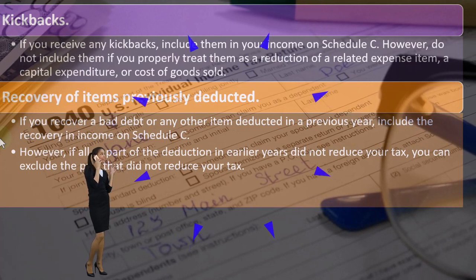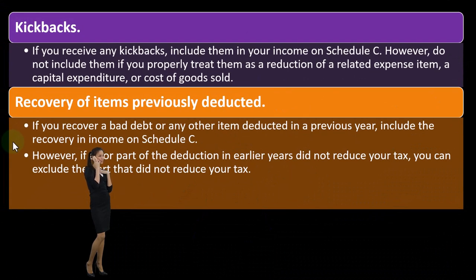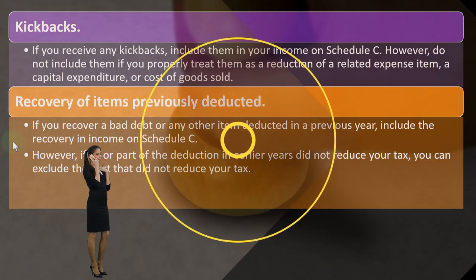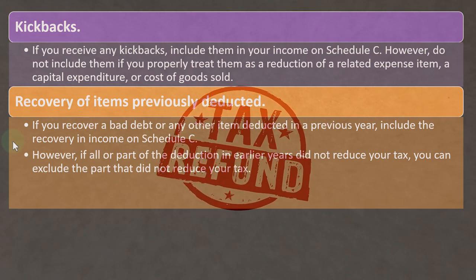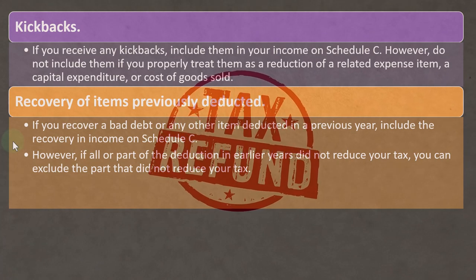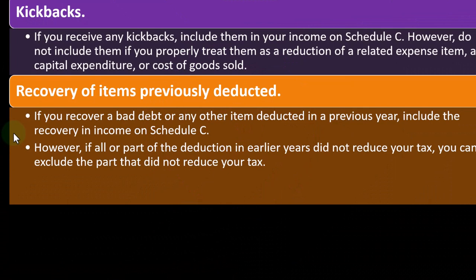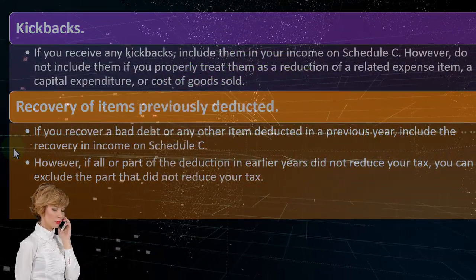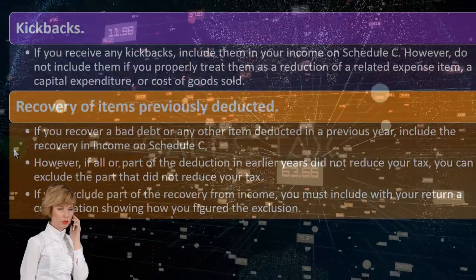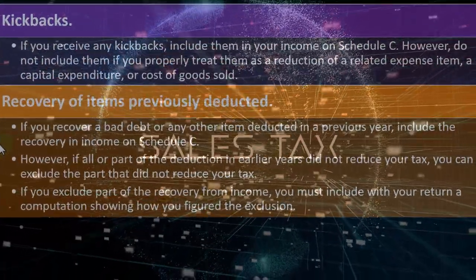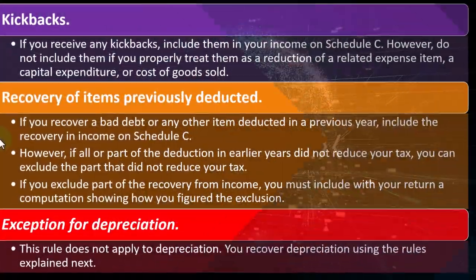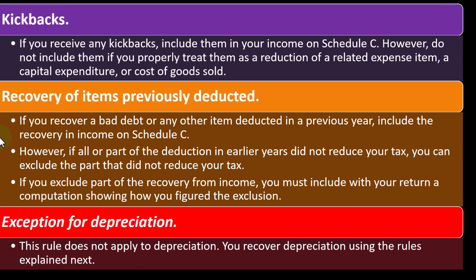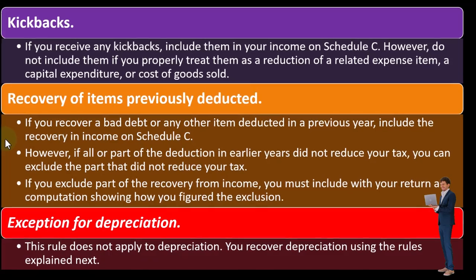However, if all or part of the deduction in an earlier year did not reduce your tax, you can exclude the part that did not reduce your tax. This is similar to the state sales tax scenario where you only include a refund in income if you received a tax benefit from the original deduction. If you exclude part of the recovery from income, you must include with your return a computation showing how you figured the exclusion. Note: this rule does not apply to depreciation, which is recovered using recapture rules.